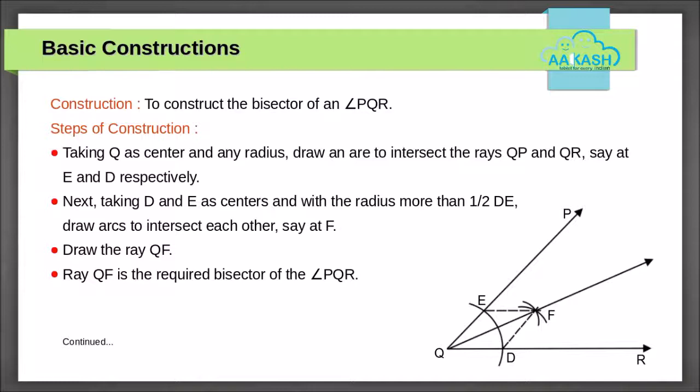Let's start with the bisection of an angle PQR. Taking any radius and Q as center, draw an arc which cuts rays QP and QR at points E and D. Now using radius greater than half of DE, draw arcs from D and E which intersect at point F. Draw ray QF. Ray QF is the required bisector of angle PQR.